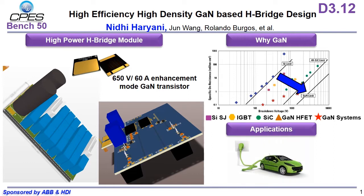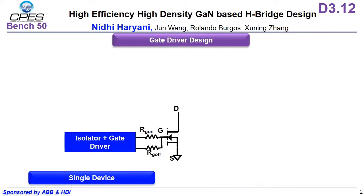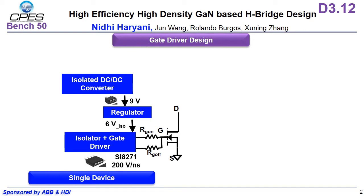I'll first talk about the gate driver design for a single device. We have an isolated gate driver which can support a dV/dt of 200 volts per nanosecond, which is required in GaN as GaN can go up to a dV/dt of 60 volts per nanosecond. The turn-on voltage for this GaN device is 6 volts and the turn-off for the single device case is 0 volts. That's why we need a regulator after the isolated power supply to supply the gate driver.